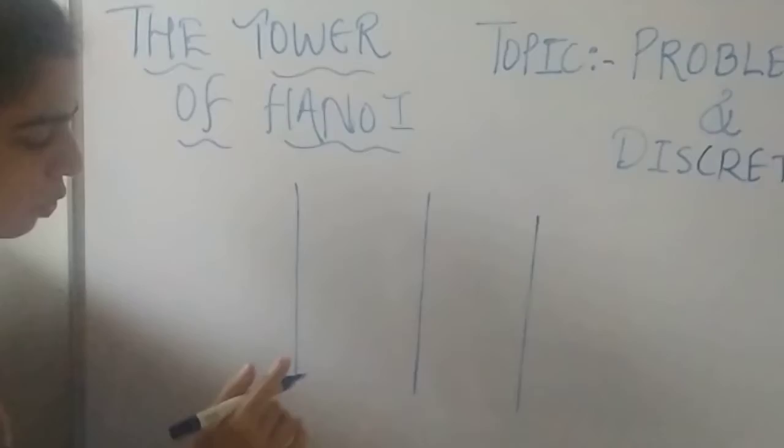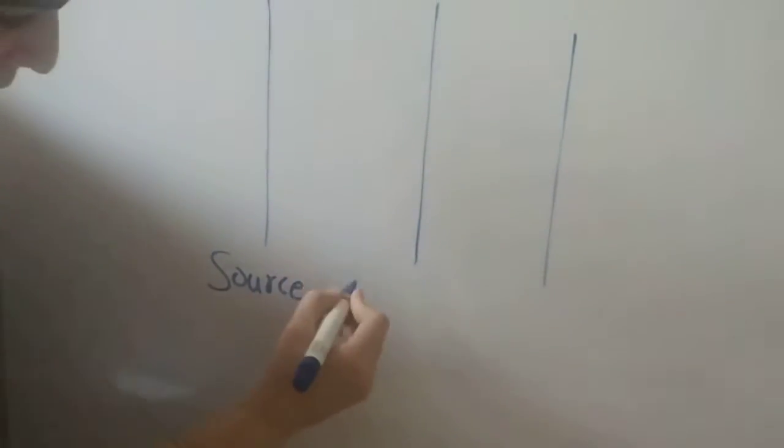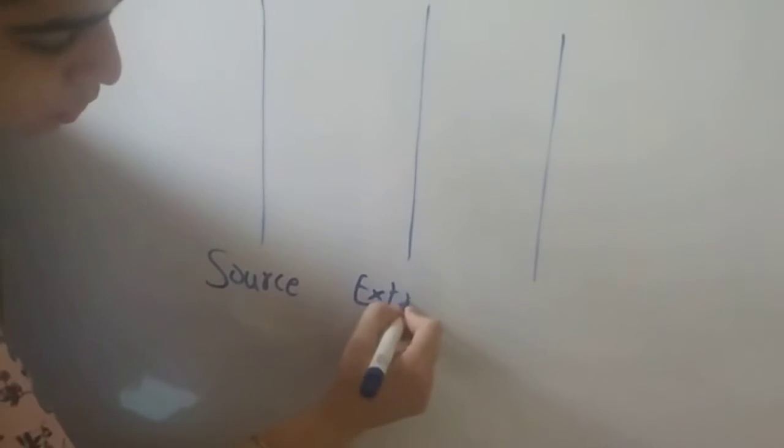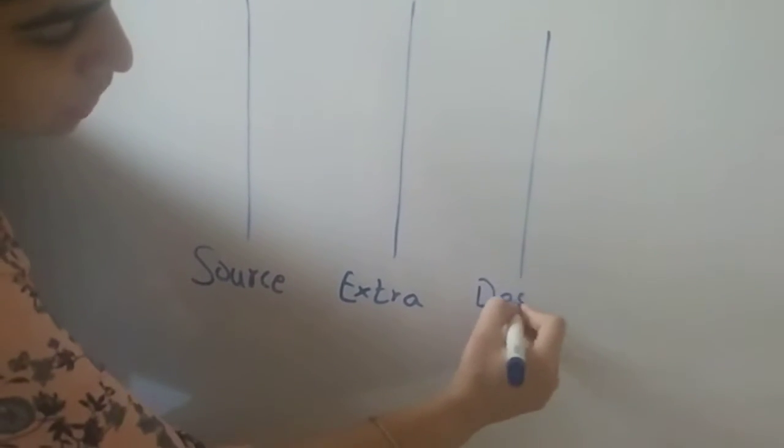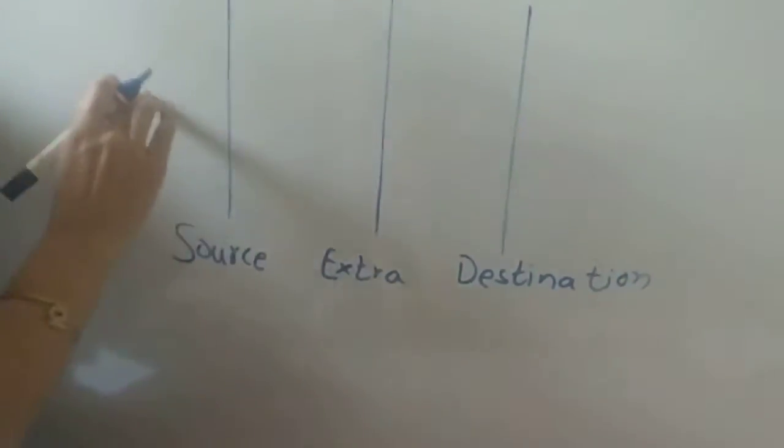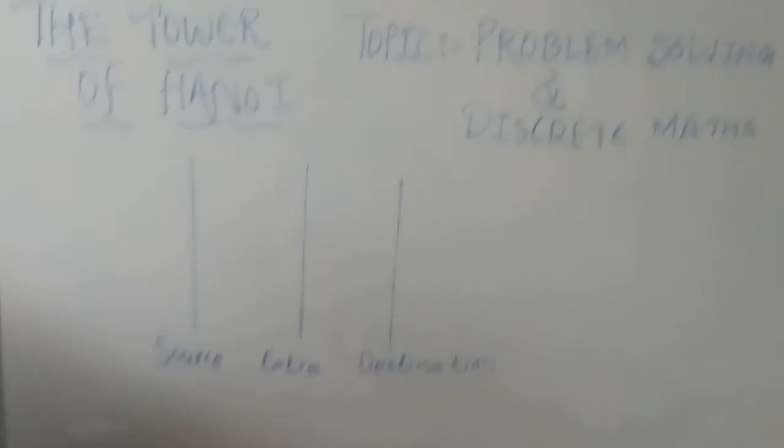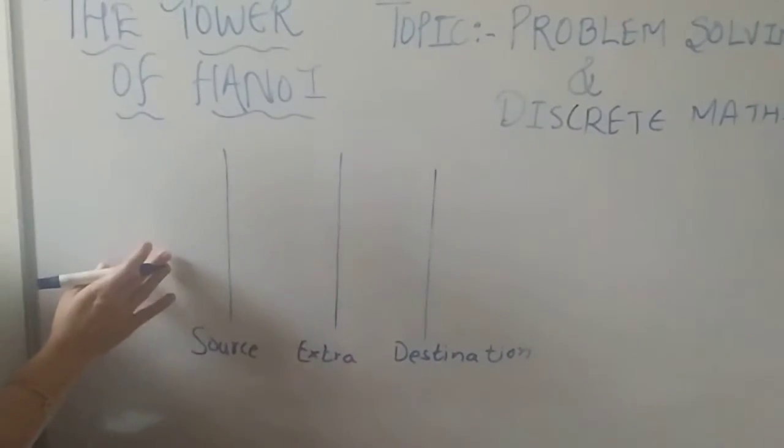This first rod is called source and the second rod is called extra. And the last rod is called destination. Destination means from source to destination we have to move all the discs. And the discs every time appear in the source rod.